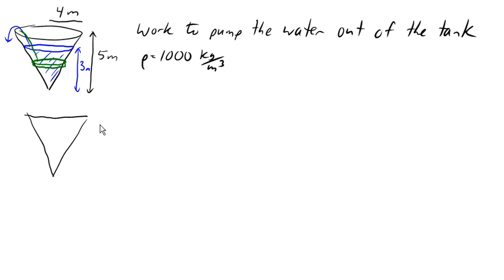And so we know that the radius of the big cone is 4 meters and the height of the cone is 5. And if we look at one of these slices here, what we really need is the radius of this slice in order to find the surface area and then the volume.